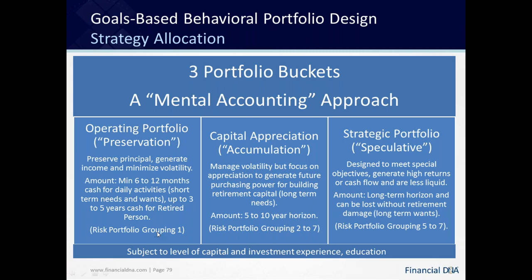The capital appreciation portfolio is probably the bucket that as the planner you would concentrate on the most, in terms of building the client's wealth to give them the retirement capital they need to meet their long-term needs. This would be a five to ten year horizon type portfolio, and depending on their risk profile they will receive a grouping of two to seven which will drive the portfolio accordingly.